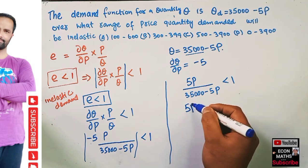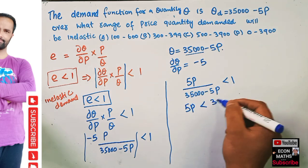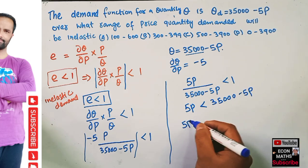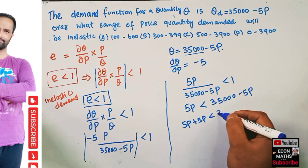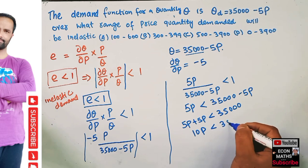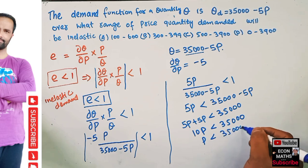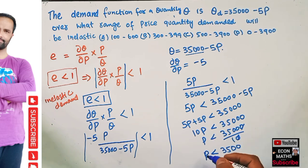Solving for P: 5P should be less than 35,000 minus 5P. Transposing minus 5P to the left side, it becomes plus 5P, giving 10P less than 35,000. Therefore P is less than 35,000 divided by 10, which simplifies to P less than 3,500, and obviously P is greater than 0.